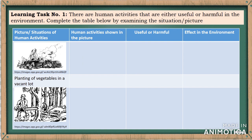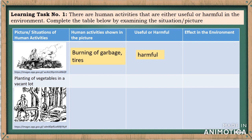Learning Task Number One: There are human activities that are either useful or harmful in the environment. Complete the table by examining the situation or picture. For the first picture, the human activity shown is burning of garbage or tires. It is harmful because the effect on the environment is air pollution or respiratory ailments.